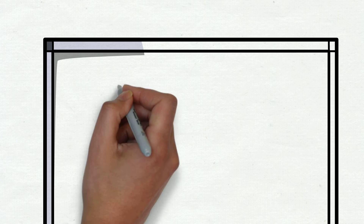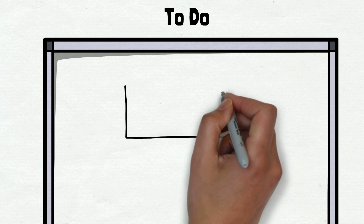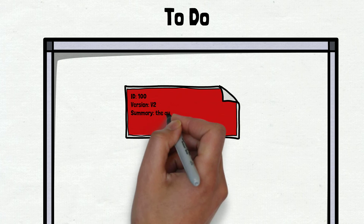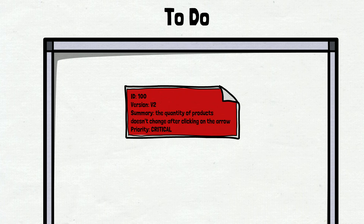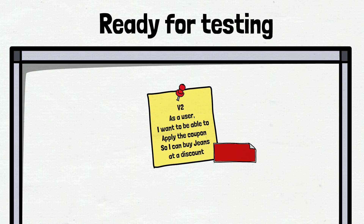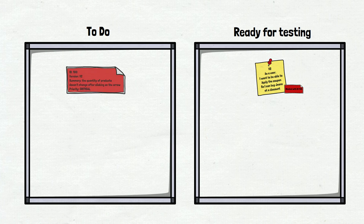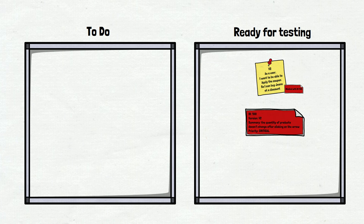We need developers to fix this bug before we continue testing. It is time to log the bug, and it sounds something like this: the number of products doesn't change after clicking on the arrow — it happens on version 2 of the website, priority is critical. We mark the user story with the coupon functionality as blocked. When the bug is fixed — and we don't need to wait too long because the priority is critical — developers fix it fast and move the ticket to ready for testing.